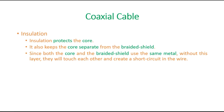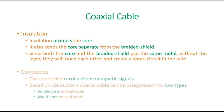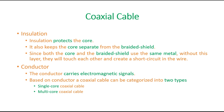The insulation part protects the core and also keeps the core separate from the braided shield. Since both the core and braided shield use the same metal, without this insulation layer they would touch each other and create a short circuit. The conductor is the innermost part which actually carries the electromagnetic signals.